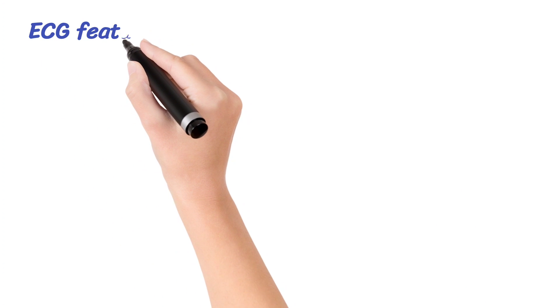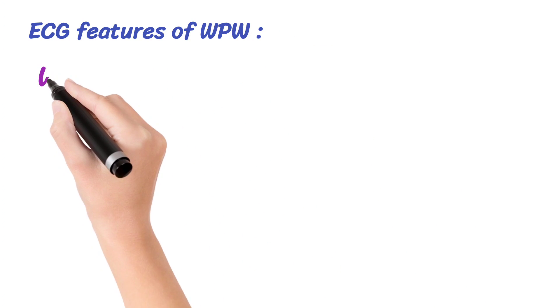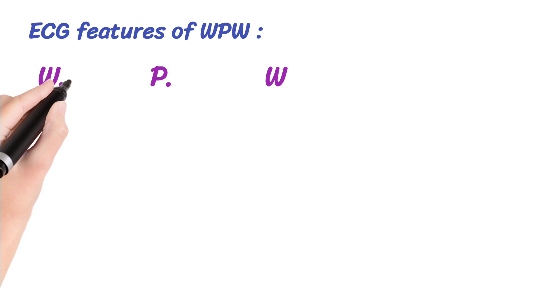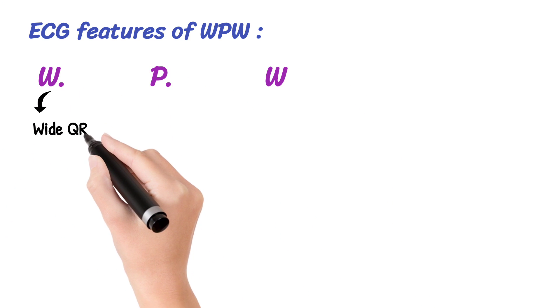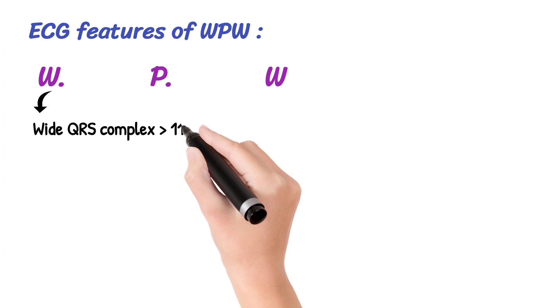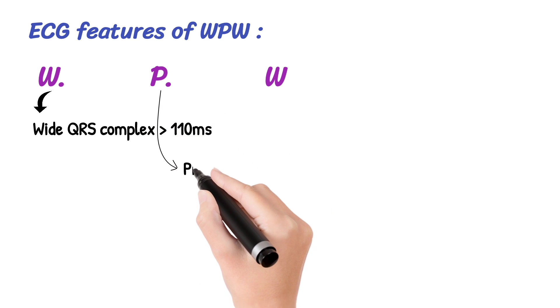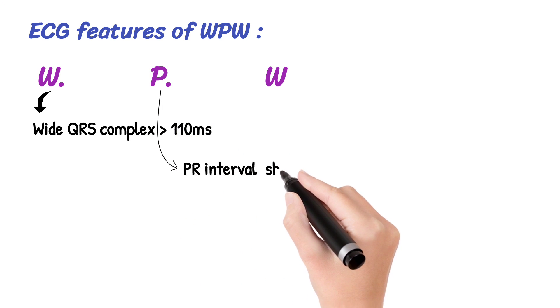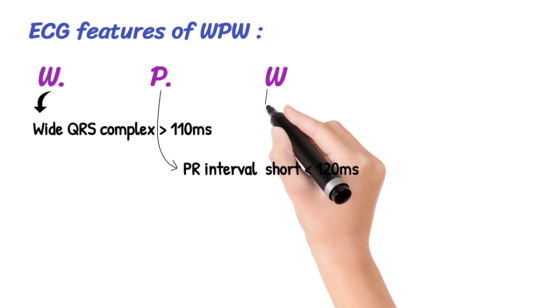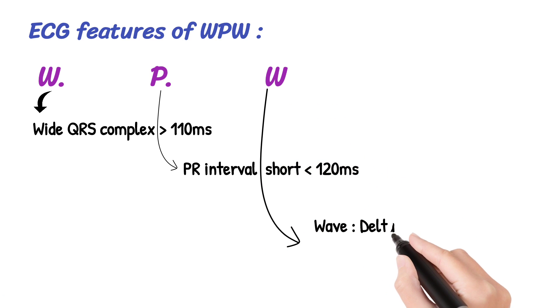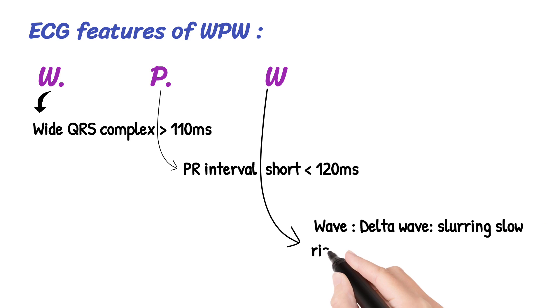ECG features of WPW - mnemonic WPW. W denotes wide QRS complex greater than 110 milliseconds. P denotes PR interval short, less than 120 milliseconds. W denotes delta wave, slurring slow rise of initial portion of the QRS.